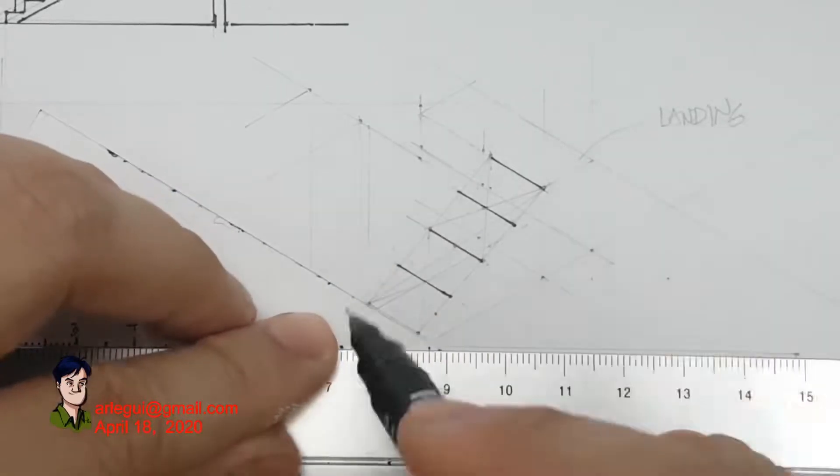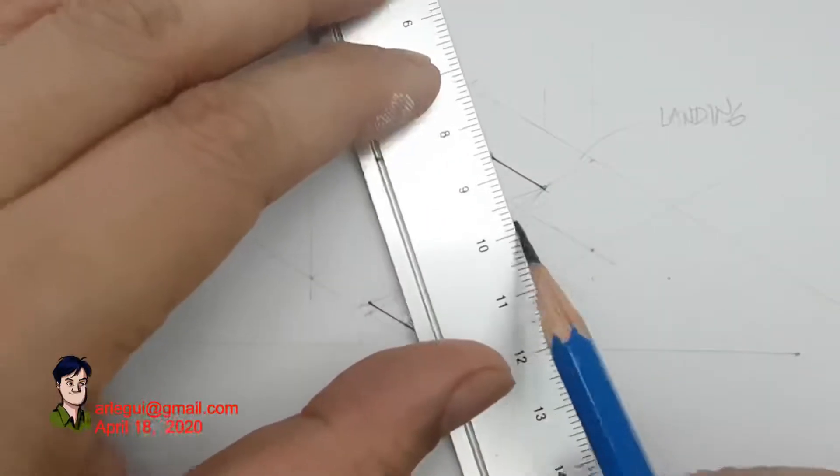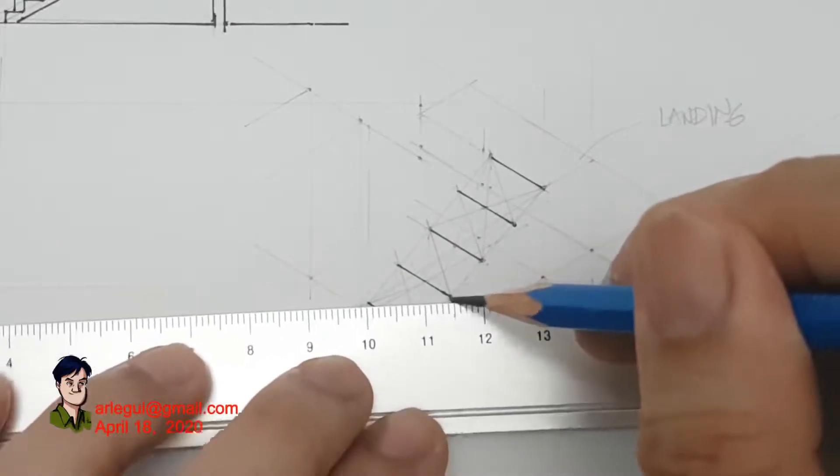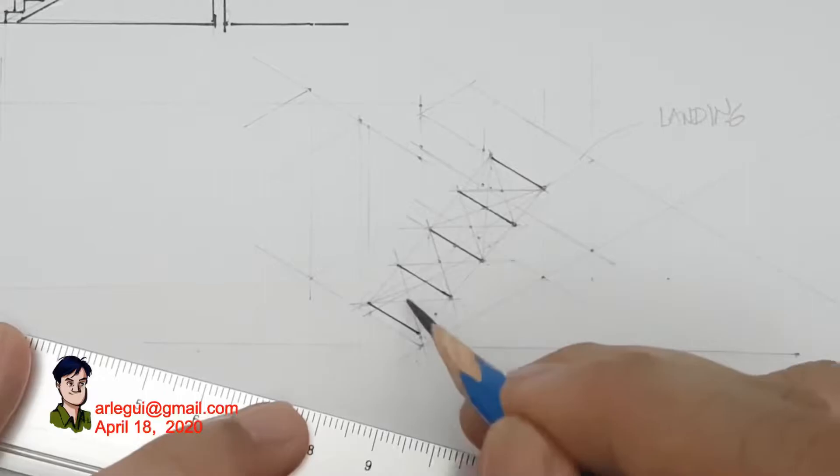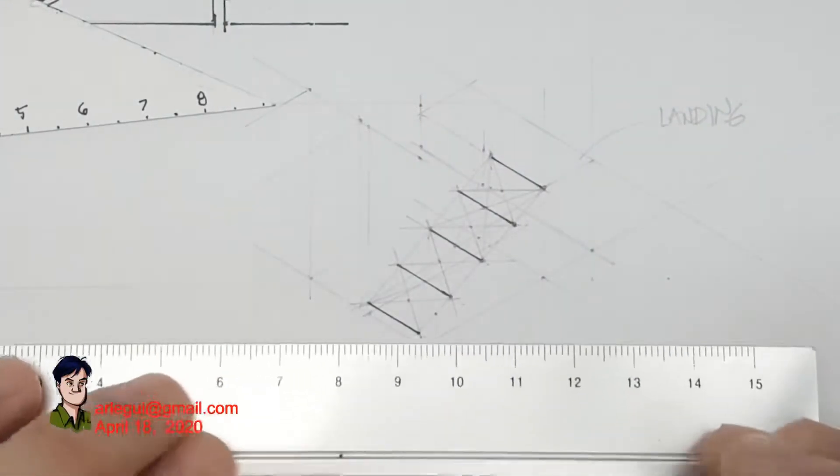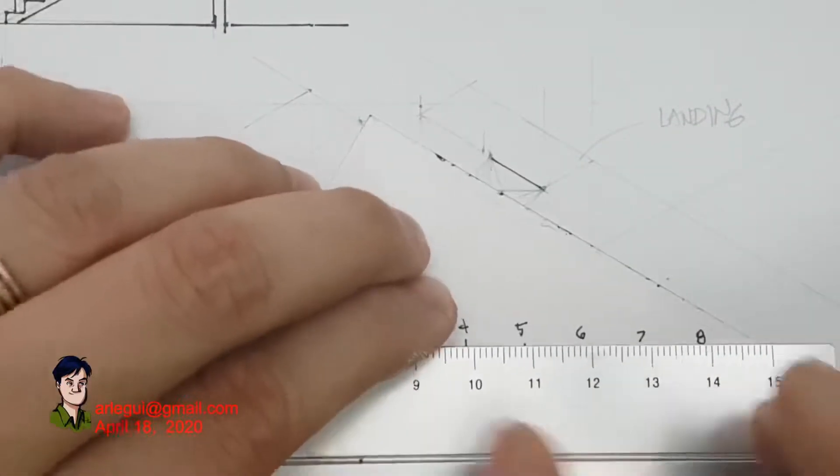Right now I'm inking the ridges of the first flight of steps and using the X-ing method to determine the in between ridges.